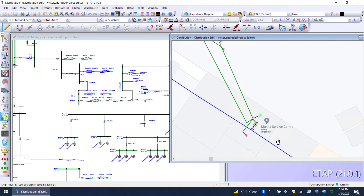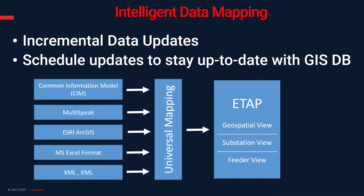More importantly, incremental data updates allow you to schedule updates to stay current with the GIS database. The GIS database serves as the universal repository of all information — not just electrical, but also water, gas, and many other disciplines. As the GIS team updates the electrical information, ETAP automatically connects to the GIS database and performs incremental data updates, so your ETAP model always remains up to date.